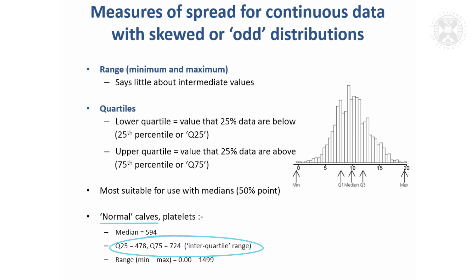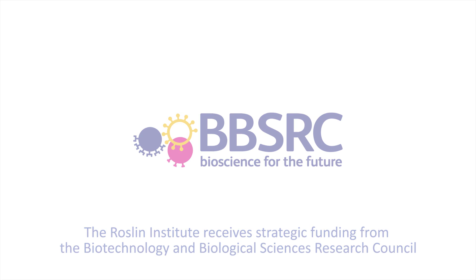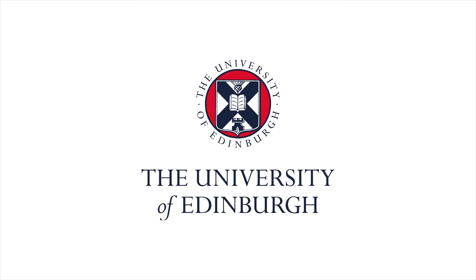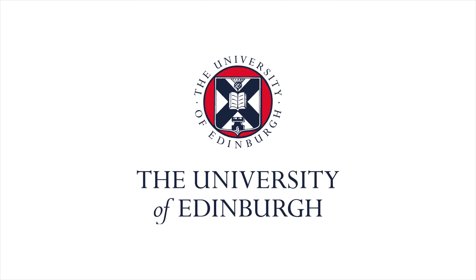For the platelets measurement with normal calves, we had a mean of about 601. The median is quite close at 594, and then the quartiles were obtained from that. So 478 is the value below which a quarter of the data lie — the 25th percentile. The upper quartile was 724, so 25% of the data were above 724. The range was 0 up to 499. That's an alternative way of summarising continuous data, and it's probably the most useful one if you think you've got a very skewed or odd distribution.